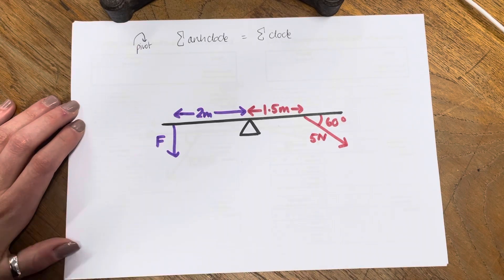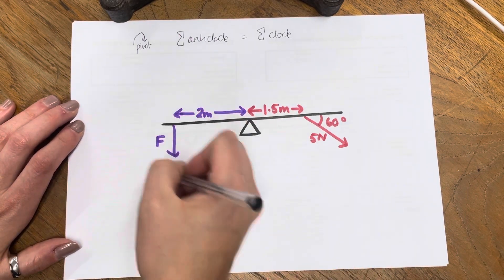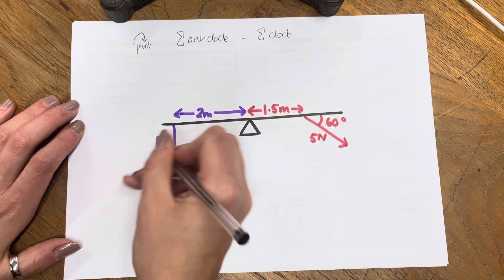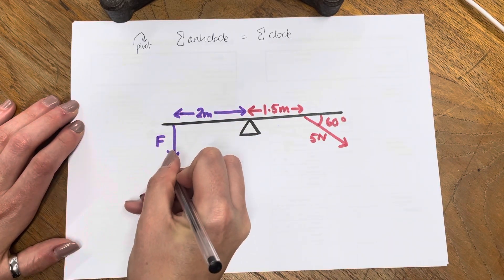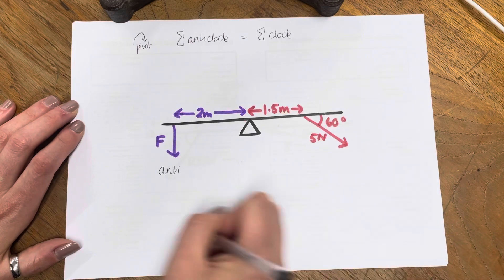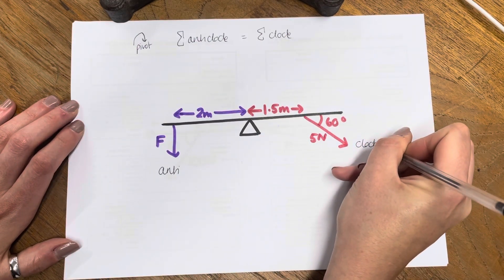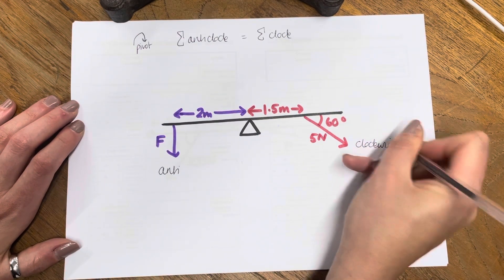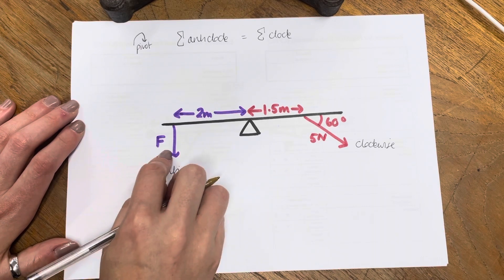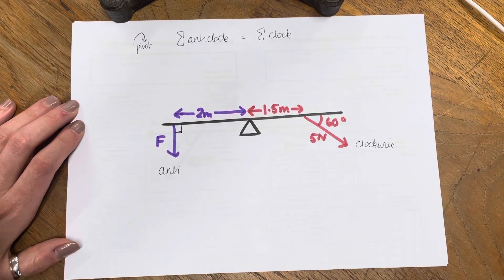I'm going to say that the sum of anticlock equals the sum of clock. There are only two forces here to make life a little bit easier, but this one is at an angle. This force here is pulling it around this way, so that is going to be anticlockwise. And this one here is pulling it that way, so it's mainly clockwise. The anticlockwise moment is pretty easy — it's just F times 2 metres, because that is perpendicular.